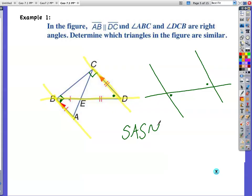So I can say these are similar because of SAS similarity. Which triangles? I guess I should say. Triangle ABE, which is that isosceles triangle, is similar to triangle EDC or CDE. Does that matter?